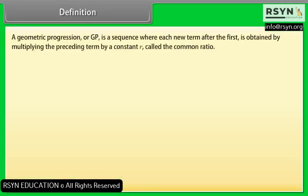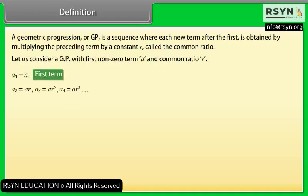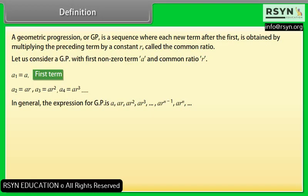A geometric progression or GP is a sequence where each new term after the first is obtained by multiplying the preceding term by a constant R, called the common ratio. Let us consider a GP with first non-zero term A and common ratio R: A1 = A, A2 = A×R, A3 = A×R², A4 = A×R³, and so on. In general, the expression for GP is A, A×R, A×R², A×R³, up to A×R^(n−1), A×R^n, and so on.